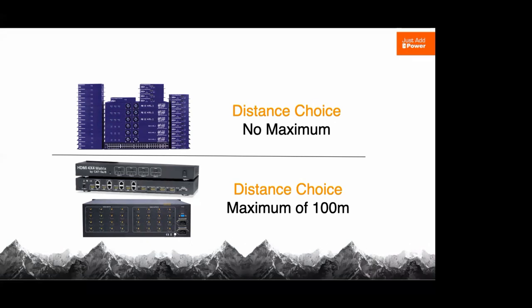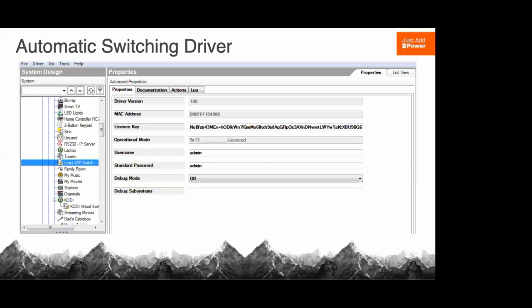We have some installations using microwave wireless or point-to-point air bridges — really start to think about what you can do with data. All of the drivers we use for the most part are automatic switching drivers. You drop the driver into your project and it reads how big that system is — in this example you see where it says 'Operational Mode 9 by 13.' It knows right off the bat what size system it's working with.